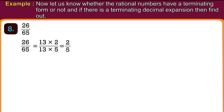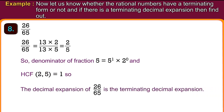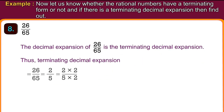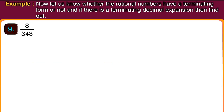Number 8: 26 upon 65. 26 upon 65 equals 13 into 2 upon 13 into 5, which simplifies to 2 upon 5. The denominator of the simplified fraction is 5, which equals 5 raised to 1 into 2 raised to 0. The highest common factor of 2 and 5 is 1. So the decimal expansion of 26 upon 65 is the terminating decimal expansion. Thus, 26 upon 65 equals 2 upon 5 equals 2 into 2 upon 5 into 2, equals 4 upon 10, equals 0.4.